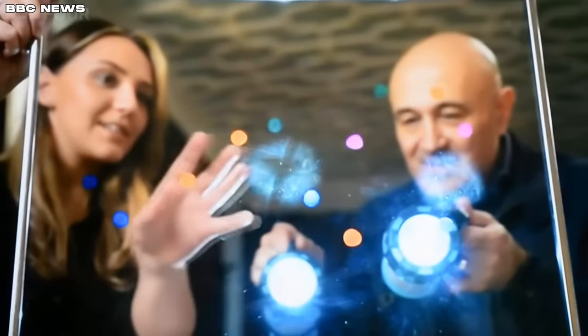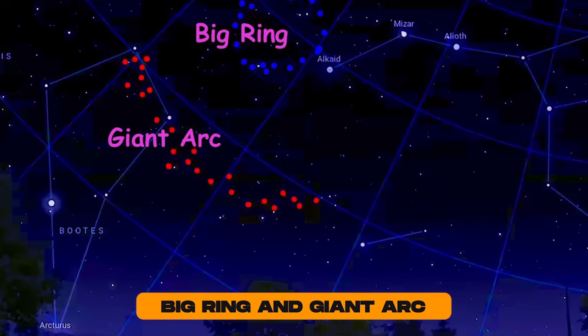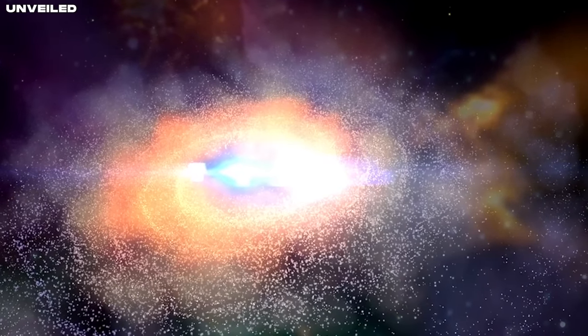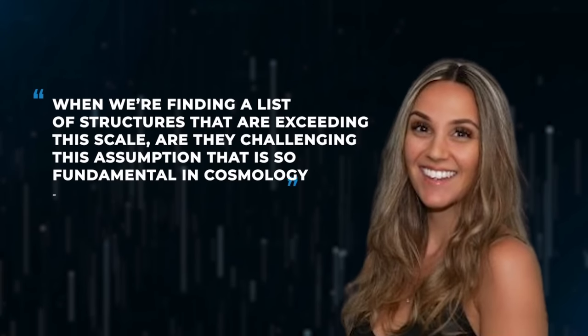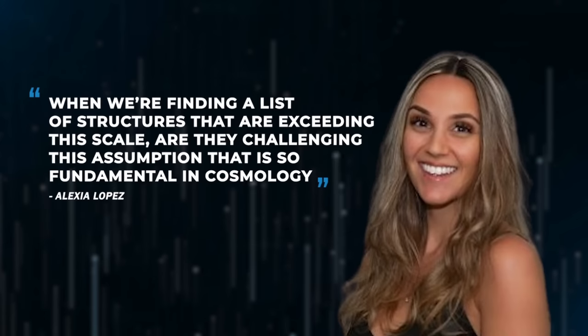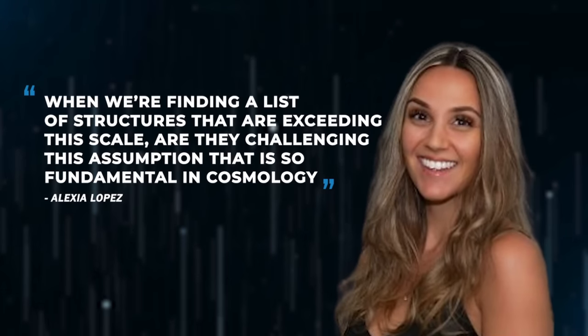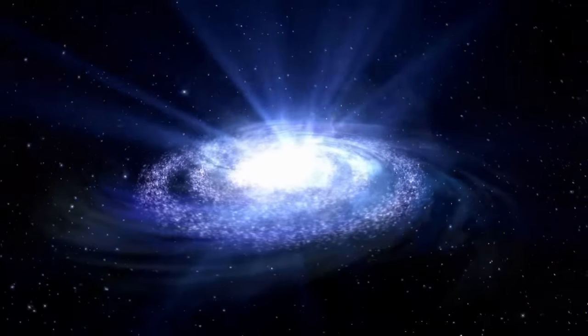On the other hand, Alexia Lopez, a PhD student at the University of Central Lancashire, has discovered what appeared to be cosmic megastructures named Big Ring and Giant Arc. These shapes, traced out by galaxies and galaxy clusters, occur on a scale beyond which the universe should be smooth and effectively featureless. Alexia Lopez said, When we're finding a list of structures that are exceeding this scale, are they challenging this assumption that is so fundamental in cosmology? Maybe there needs to be more of a critical analysis of our standard model.